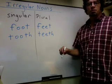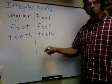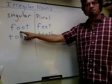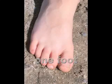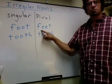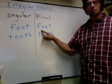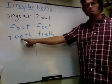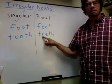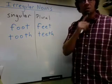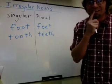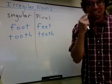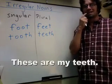Two very important nouns to make in the plural form are foot and tooth. One foot, two feet. One tooth. I have one tooth. And then the plural form: teeth.